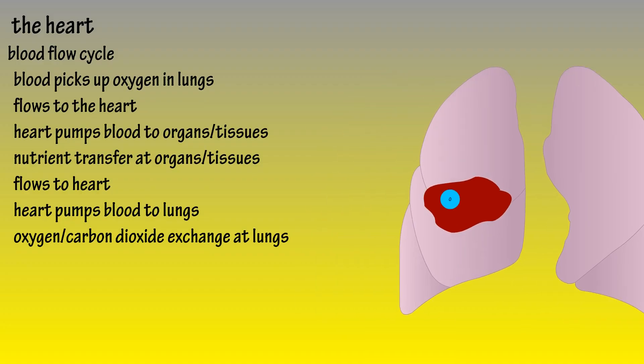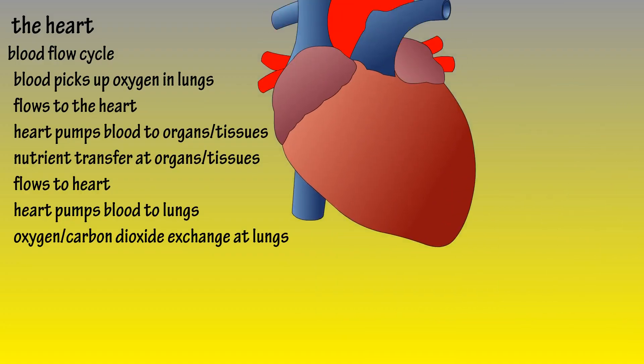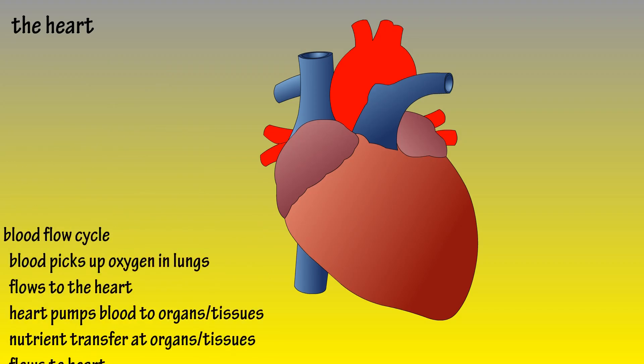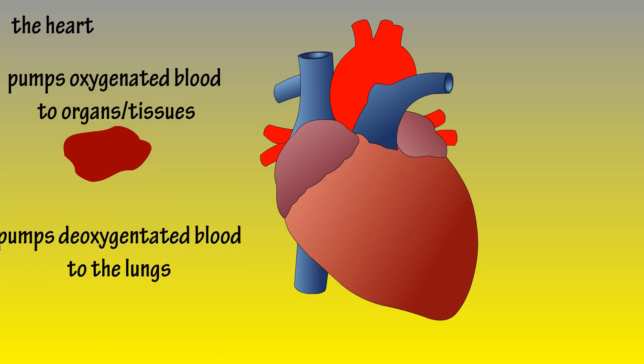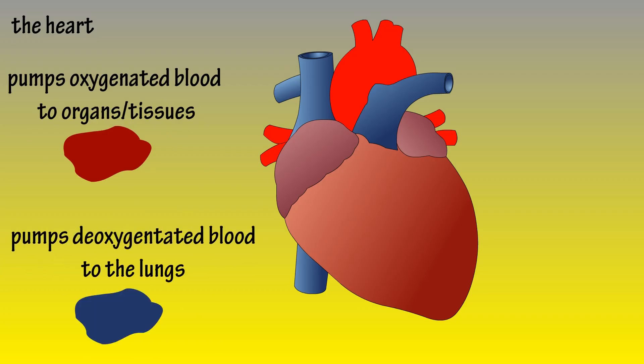Now back to the heart. The heart pumps oxygen-rich, or oxygenated, blood to tissues and organs, and it pumps deoxygenated blood to the lungs.